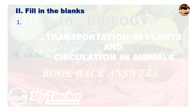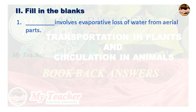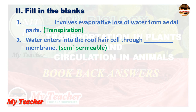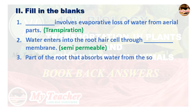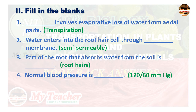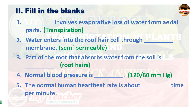Fill in the blanks. First: Transpiration involves evaporative loss of water from aerial parts. Second: Water enters into the root hair cell through a semi-permeable membrane. Third: The part of the root that absorbs water from the soil is root hairs. Fourth: Normal blood pressure is 120/80 mmHg. Fifth: The normal human heartbeat rate is about 72 to 75 times per minute.